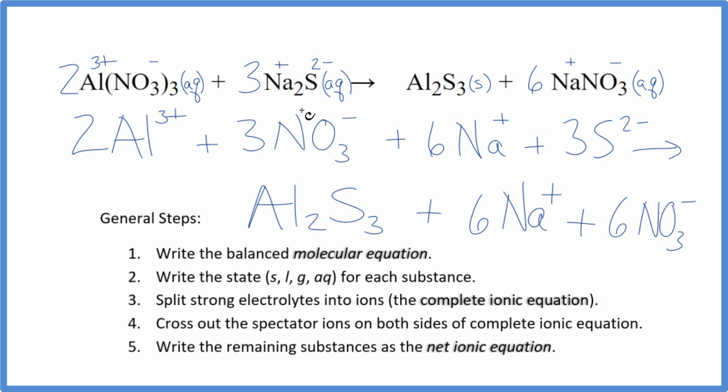And actually, I see there's a bit of a problem. I made a mistake. It's 3 times 2. So this shouldn't be 3. This should be 6. So we should have the 6 nitrates here in the reactants.